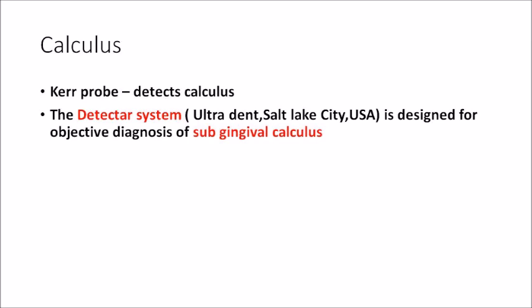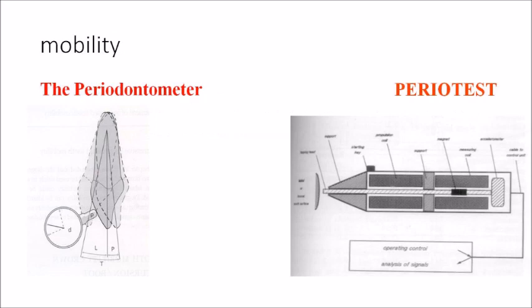For calculus detection, conventional visual examination works for supragingival calculus, and an explorer with tactile perception detects subgingival calculus. There are specific diagnostic aids: the Kerr probe is a probe that detects calculus. The Detector system is for the subgingival diagnosis of calculus — it objectively detects it. Key Laser is another system which both detects and removes calculus.